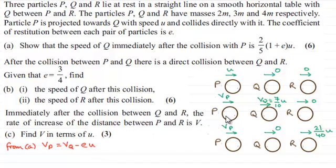Then after the next impact, that was between Q and R, we found out that Q came to rest and R went towards the right with a speed of 21/40 u.